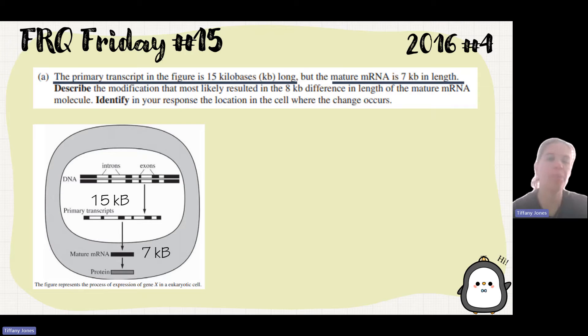Now we have to think, use our diagram to answer the question. I see that my primary transcript has these black regions and these white regions. Based on this, I know that the black regions are exons and the white regions are introns.